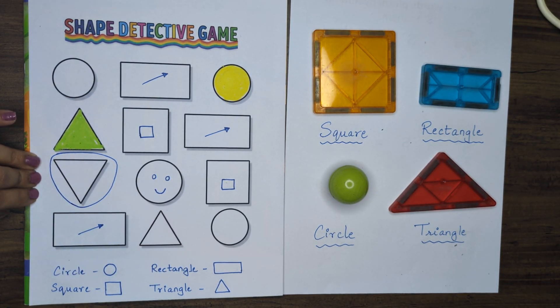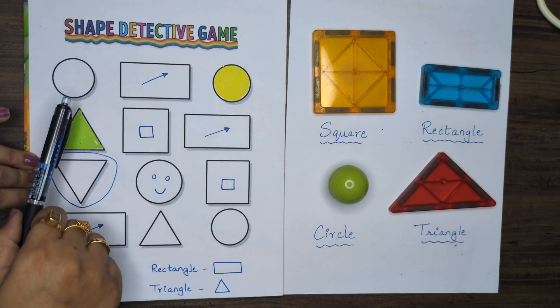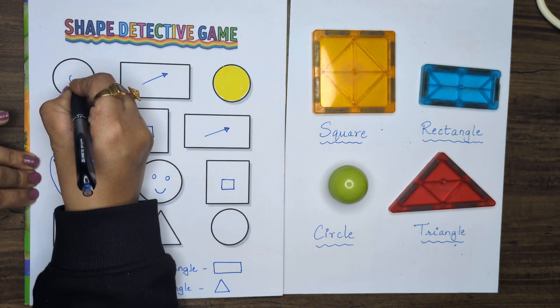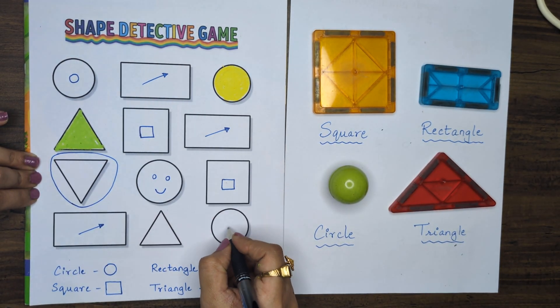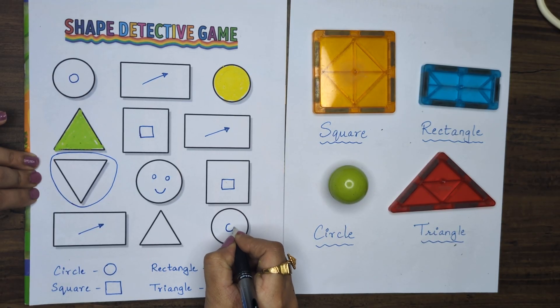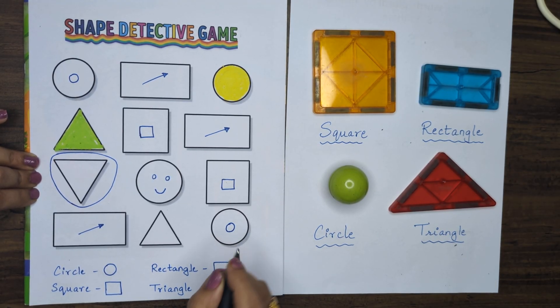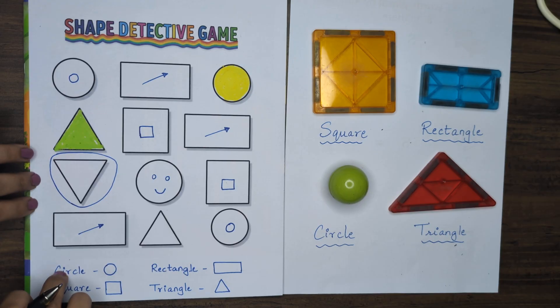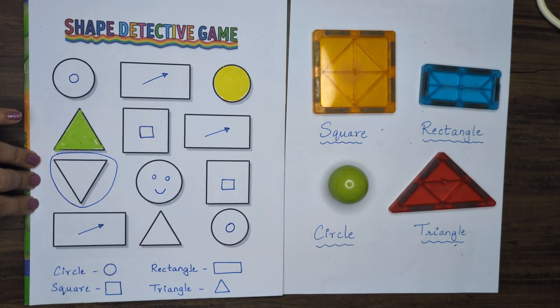Draw a small circle inside the figure that looks like a ball. Draw a circle inside all the figures that look like a ball. Circle looks like a ball. I have drawn a circle inside the ball figure which is a circle.